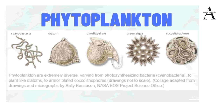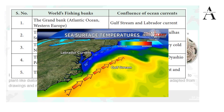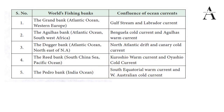We have world-famous fishing banks formed at the confluence of ocean currents. The Grand Bank in the Atlantic Ocean is formed at the confluence of the Gulf Stream (warm current) and the Labrador Current (cold current), creating an ecotone with edge effect — making it a best fishing ground. Similarly, Agulhas Bank, Dogger Bank, Reed Bank, and Petro Bank exist in various oceans, such as where the South Equatorial warm current and West Australian cold current meet in the Indian Ocean.